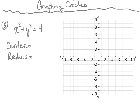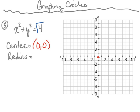Example number 3: we have the equation x squared plus y squared equals 4. First thing we need to do is locate our center. Notice in this equation we don't have an h or a k. When the equation is written like this, the center of our circle is going to be at the ordered pair 0, 0 — right at the origin. Next, we find the radius by taking the square root of 4, which is 2. From the center we move right 2, left 2, up 2, and down 2, then connect those 4 points. This is the circle for x squared plus y squared equals 4.